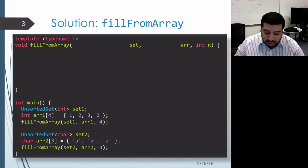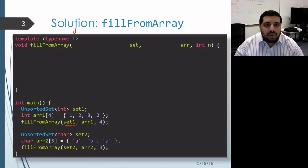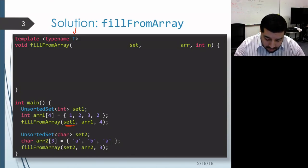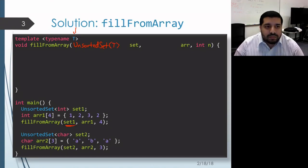Okay, so let's go ahead and start by filling in the parameter list. The first parameter is going to be a set object, but we need to parameterize it with the actual element type. It's going to be an unsorted set that holds elements of type T, so we write that as unsorted set with T within the angle brackets.